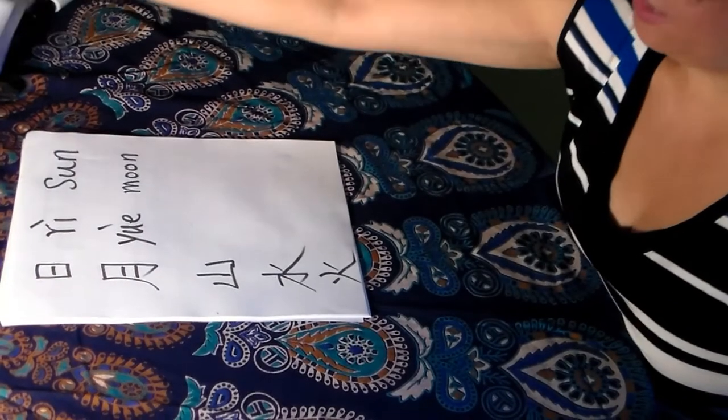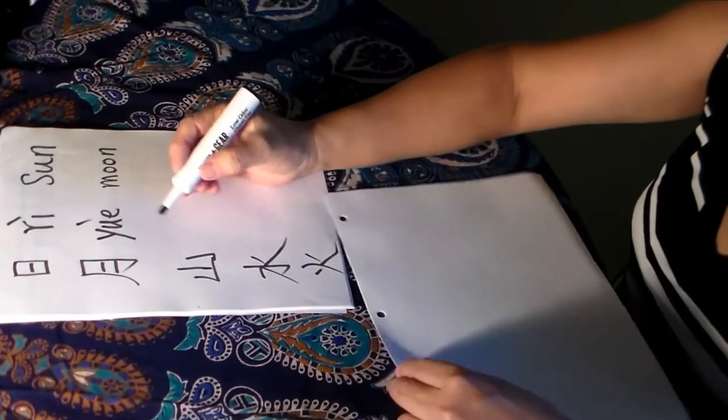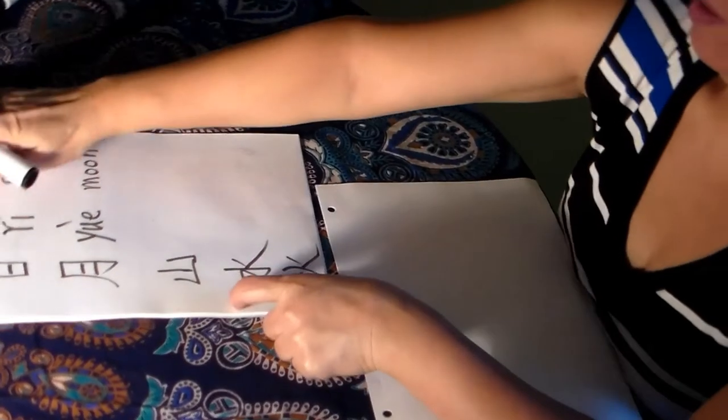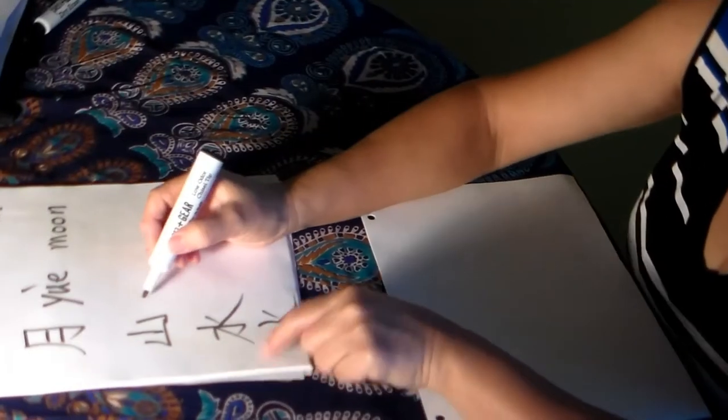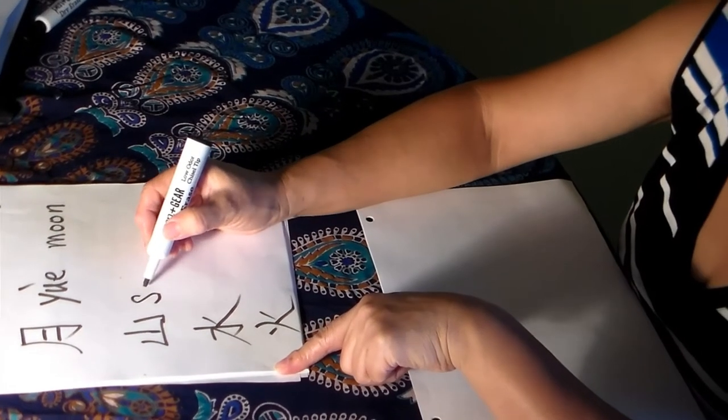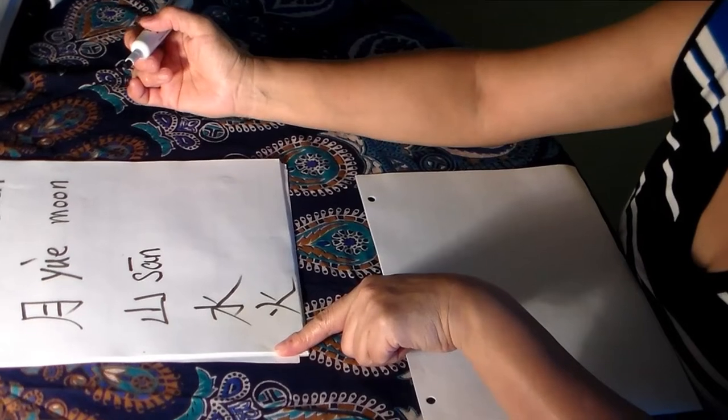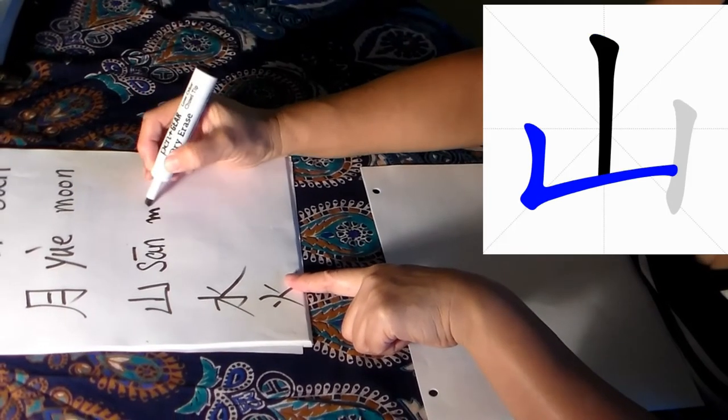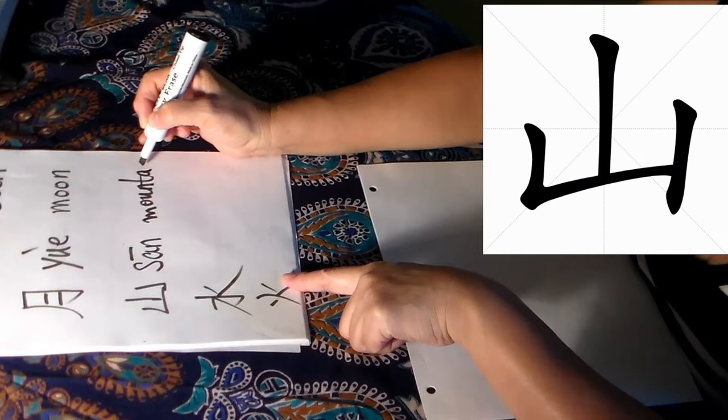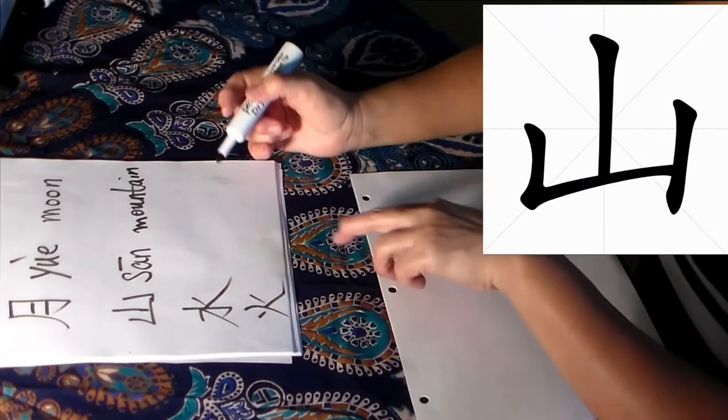This word is super easy. This is a mountain. Shan. Shan, shan. Mountain. Mountain, okay.